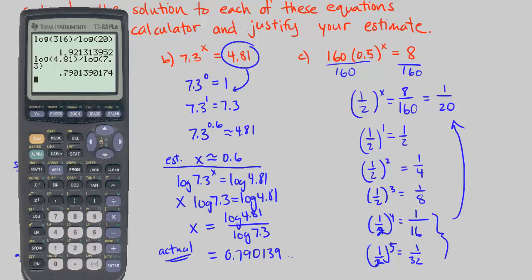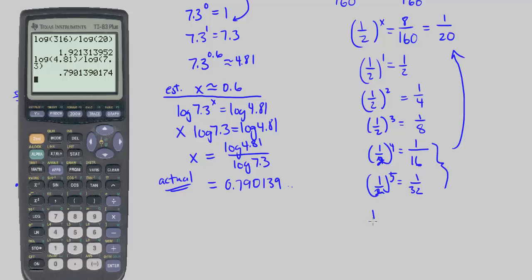So we can approximate 1 half to the power of somewhere between 4 and 5. Let's say 4.5 is approximately 1 over 20. That's our estimate. So our estimate for x is 4.5.